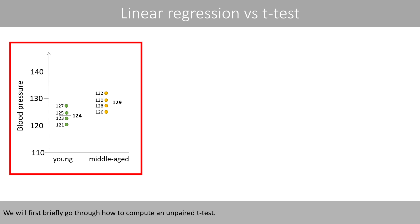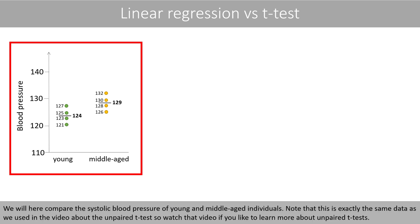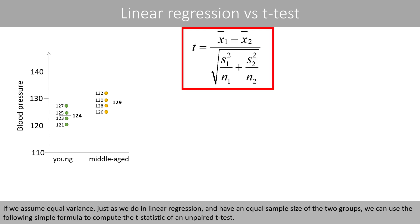We'll first briefly go through how to compute an unpaired t-test. We will compare the historic blood pressure of young and middle-aged individuals. Note that this is exactly the same data as we used in the video about unpaired t-tests, so watch that video if you'd like to learn more. If we assume equal variance, just as we do in linear regression, and have an equal sample size of the two groups, we can use the following simple formula to compute the t-statistic of an unpaired t-test.